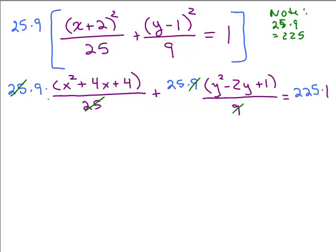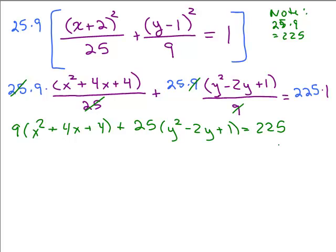All right, now we have to keep going. So I need to now multiply 9 times what I have in the parentheses here. So I have 9 times (x² + 4x + 4) plus 25 times (y² - 2y + 1) equals 225. So I'm getting closer to the general form.